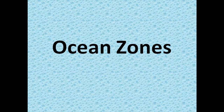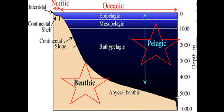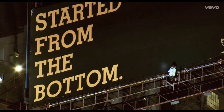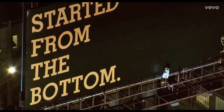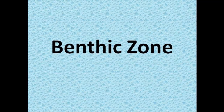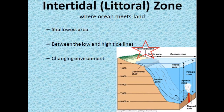The ocean is divided into many zones. Two basic divisions of the ocean are the benthic zone and the pelagic zone. The pelagic zone is all the water, and the benthic zone is all the land at the bottom of the water. The highest level of the benthic zone is the intertidal or littoral zone, which is where the ocean meets the land.